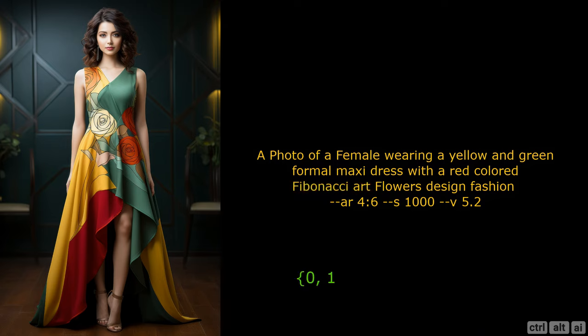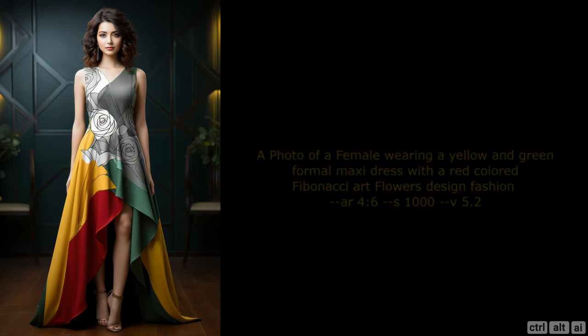The Fibonacci sequence is used to create patterns and shapes. It is a series of numbers where each number is the sum of the two previous numbers. The sequence starts with 0 and 1 and then continues with 1, 2, 3, 5, 8, 13, and so on. This sequence is in many natural patterns, such as the arrangement of leaves on a stem, the spiral of a seashell, and the petals of a flower. Fibonacci flowers is a subset math formulation of the main Fibonacci sequence.